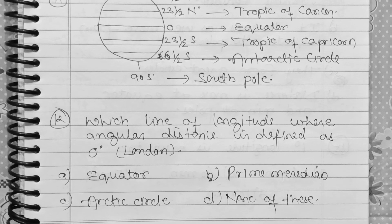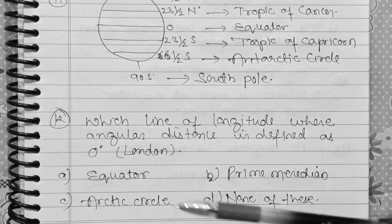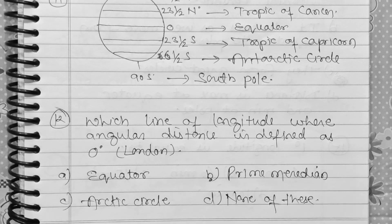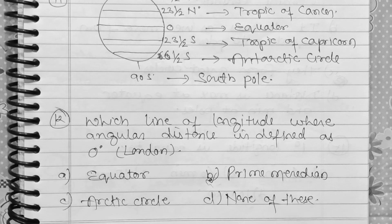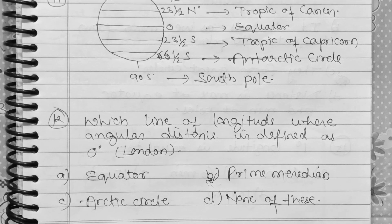Question 12: Which line of longitude has an angular displacement defined as 0 degrees? Option A: Equator. Option B: Prime Meridian. Option C: Arctic Circle. Option D: None of these. The correct answer is the Prime Meridian, which passes through London, Greenwich, and its angular displacement is 0 degrees.